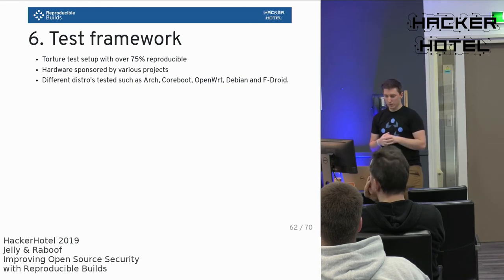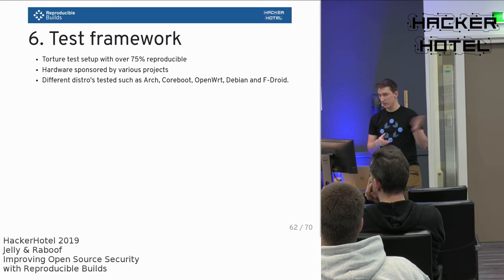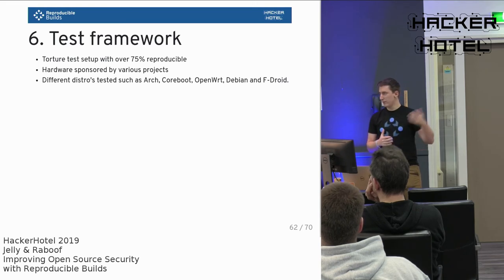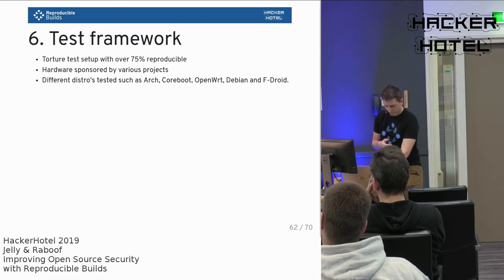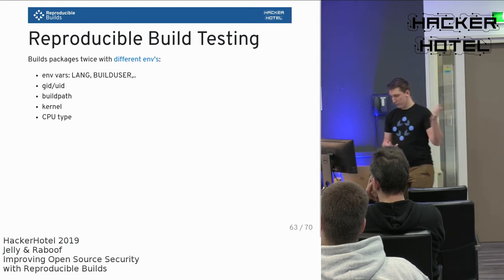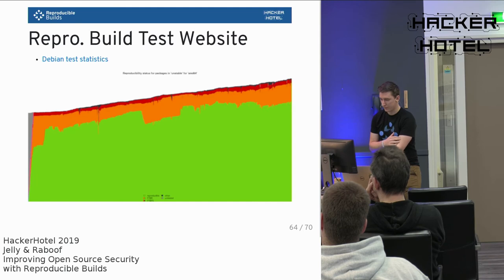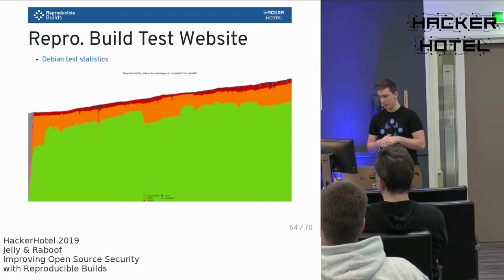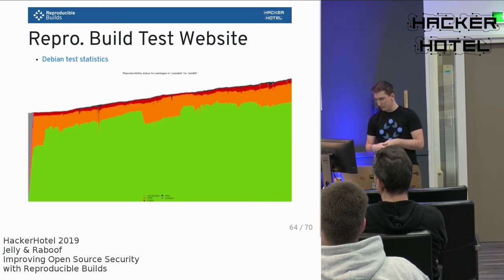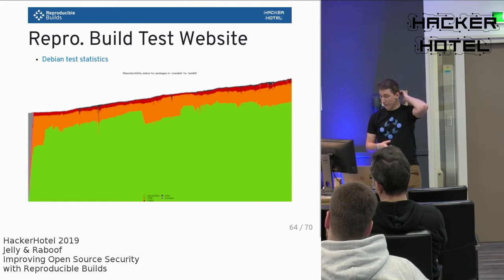When the reproducible builds project started, a test framework was needed, and many distributions have since joined in. Debian started it, and now Arch, openSUSE, CoreBoot, OpenWrt, and F-Droid have been included. The framework builds packages twice on different machines with different variations — build user, UID/GID, build path, kernel, and CPU type — then compares hashes to determine if the build is reproducible. The green portion on the graph shows what is currently reproducible in Debian unstable, which has more variation than stable.